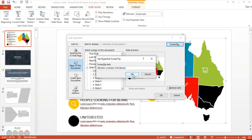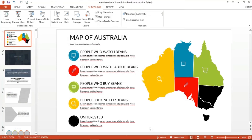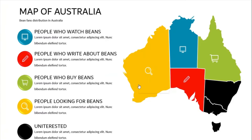Now, as usual, here on normal mode, once you hover over the yellow part, you won't get any of that rollover text. But once we go to presentation mode, hovering over the yellow area with the magnifying glass icon gives us the pop-up text that reads 'people looking for beans.'